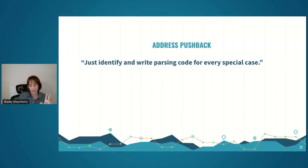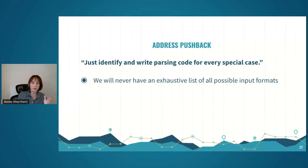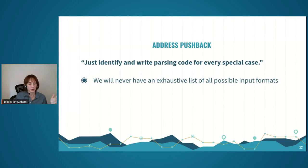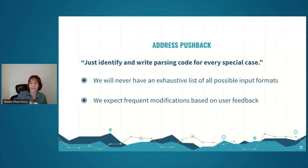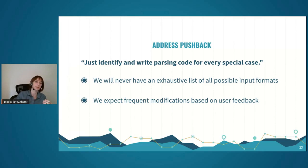I want to address potential pushback: can you not just write parsing code for every special case? If there were a finite number of special cases, eventually we could get there. But this is human-entered data that will always have different kinds of quirks, so we'll never have an exhaustive list to write parsing code for. Also, Civis's specialty is data and building tools — we're not malaria experts. We anticipate getting feedback from malaria experts and improving our configurations iteratively, so there's an ongoing need for flexibility.